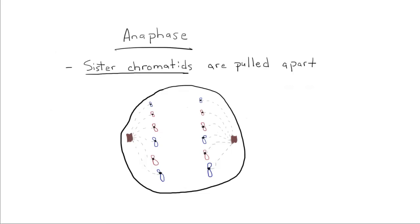During anaphase, each side of the chromosome, which are called the chromatids, are going to be pulled to opposite sides of the cell.